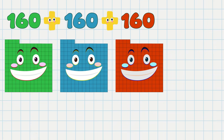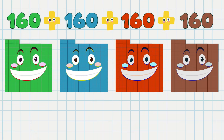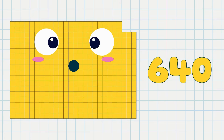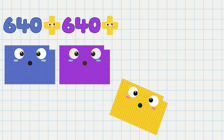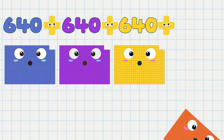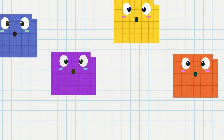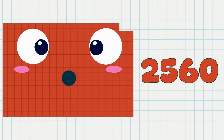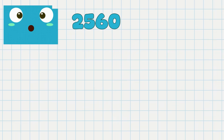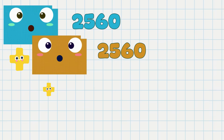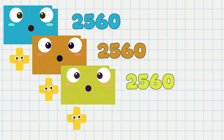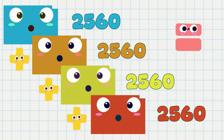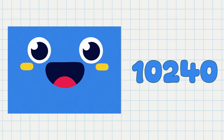160 plus 160 plus 160 equals 640. 640 plus 640 plus 640 equals 2,560. 2,560 plus 2,560 plus 2,560 equals 10,240.